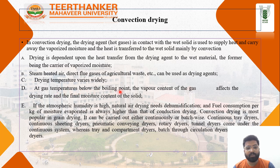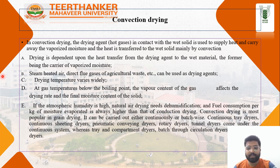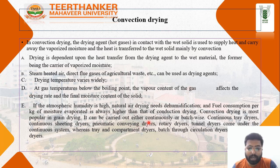At gas temperatures below the boiling point, the vapor content of the gas affects the drying rate. If the atmospheric humidity is high, natural air drying requires dehumidification. Fuel consumption per kilogram of moisture evaporated is always higher than in conduction drying. Convection drying is the most popular method of grain drying and can be carried out either continuously or batch-wise.